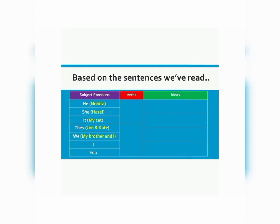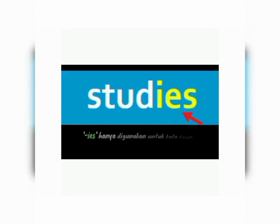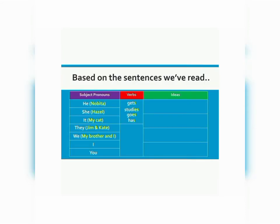These subject pronouns are the main factor that contribute to the differences of the verbs that you read from the sentences just now. Remember, whenever we are using the subject pronoun he, she, and it, the verb must have an S. However, not every verb when it meets these subject pronouns takes just S at the back. We can also put IES — IES is only used for any verb that ends with the letter Y — therefore we have to change to IES if the verb meets one of these subject pronouns.